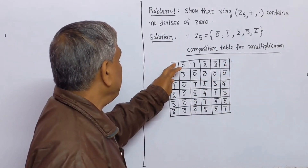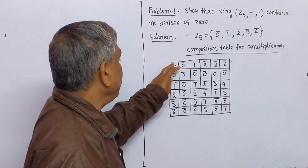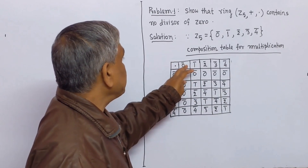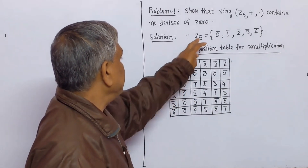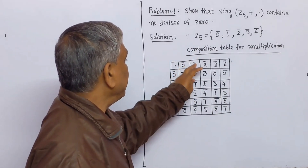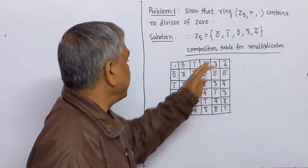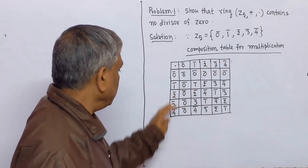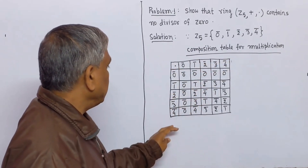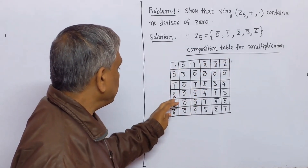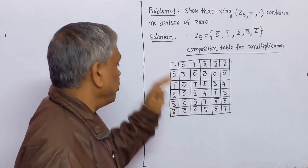Here, binary operation is multiplication. The elements of Z5 are 0-bar, 1-bar, 2-bar, 3-bar, 4-bar in the row, and also in the column: 0-bar, 1-bar, 2-bar, 3-bar, 4-bar.